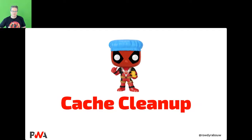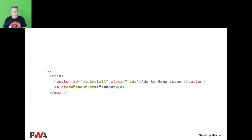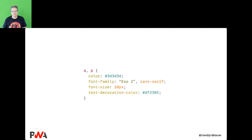When caching, we need to clean up as well. We should give caches a version number. To demonstrate, I created another page called 'about' and added a link to it in index.html. The about page is simple with a link to my real website. If you change even one bit of the service worker JavaScript file, the browser detects the change — so always set a new version number for your own sanity.